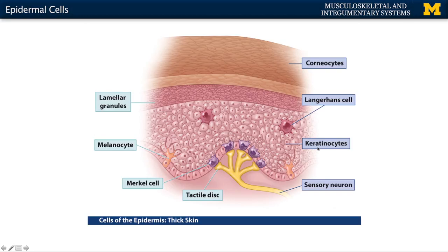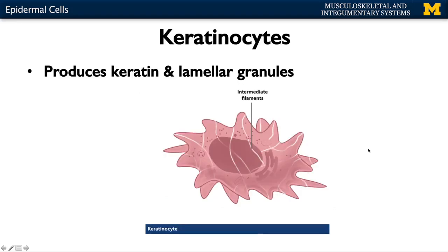We're going to spend quite a bit of time on this visual, which illustrates the four main types of cells. The focus right now is on keratinocytes. Keratinocytes are the primary cell of the epidermis, composing more than 90% of it. They produce the keratin protein we've been discussing, as well as lamellar granules — which fill the spaces between keratinocytes, providing additional protection.